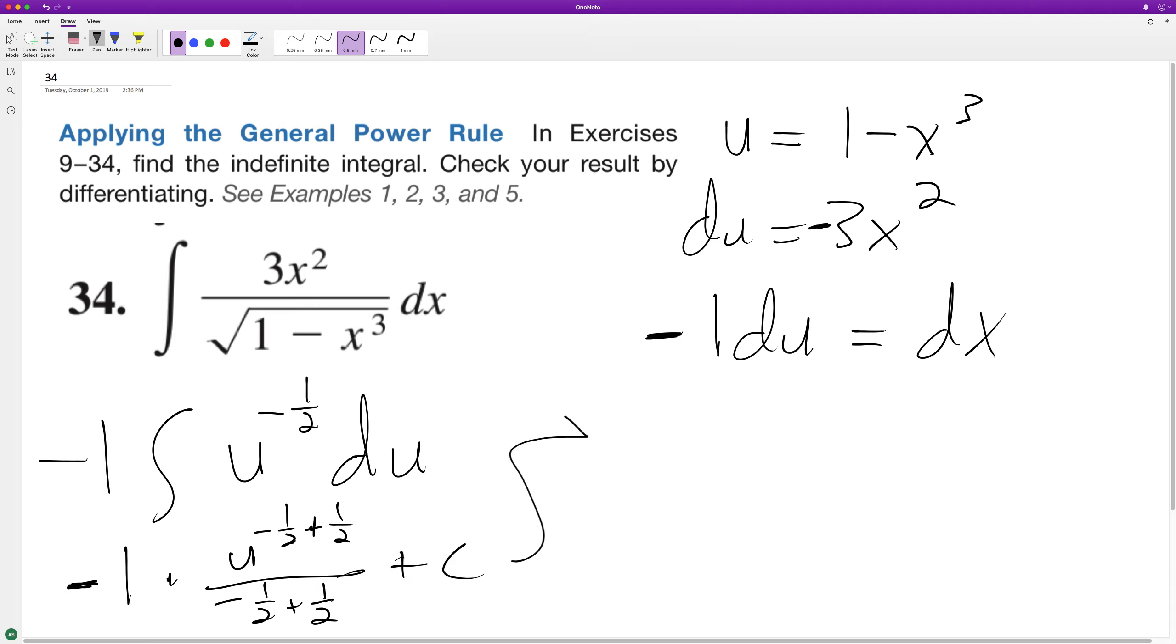So we end up with negative 1 times u raised to the 1 half over 1 half, which just makes this negative 2, u to the 1 half plus c.